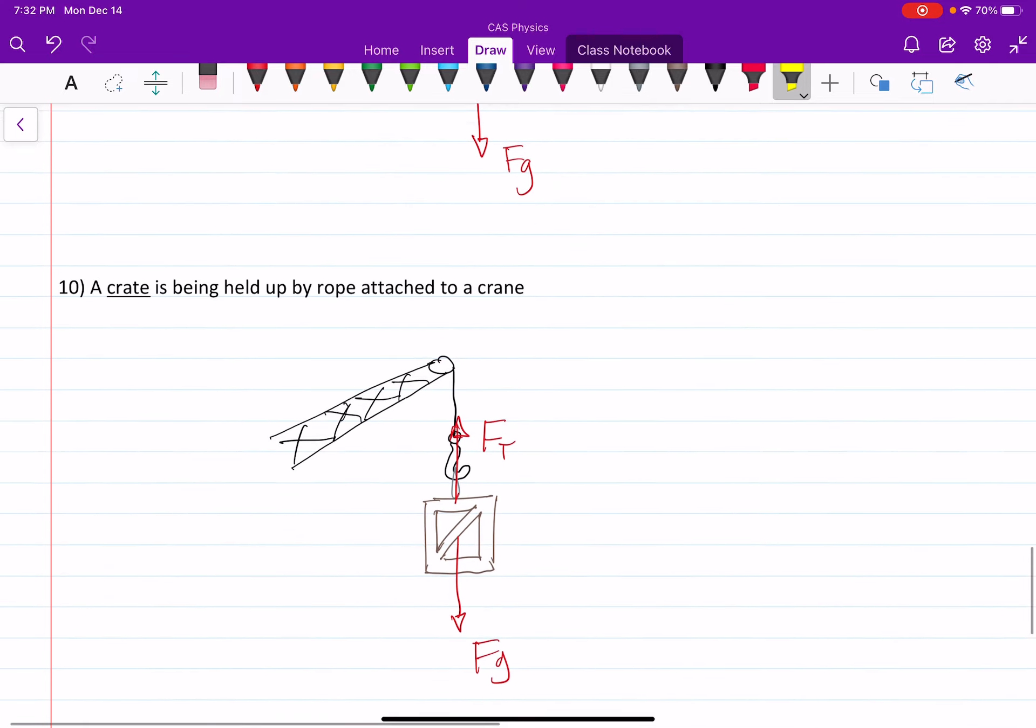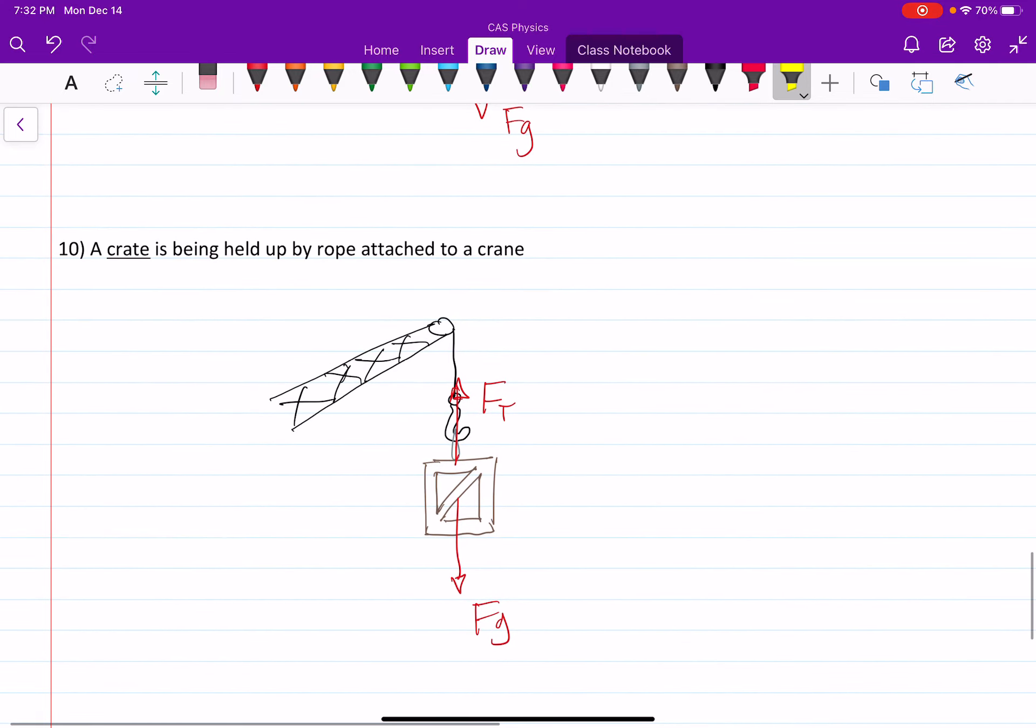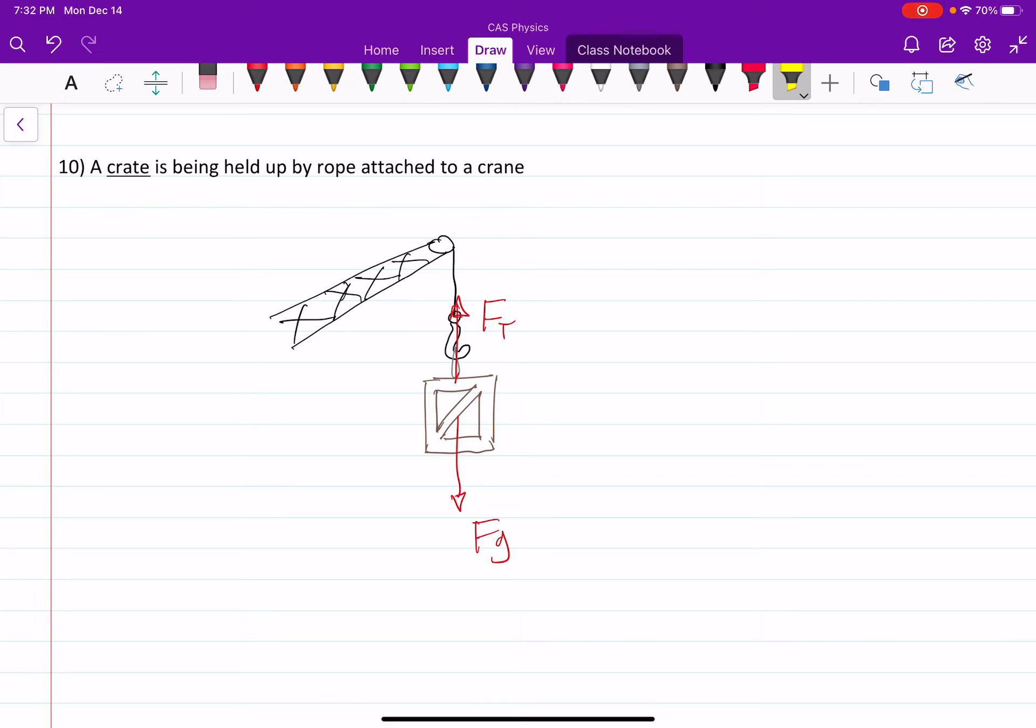And finally, a crate is being held up by a rope attached to a crane. Same idea as the previous question, but I'll just call this force a tension force instead of spring force. So FT and Fg acting opposite each other.